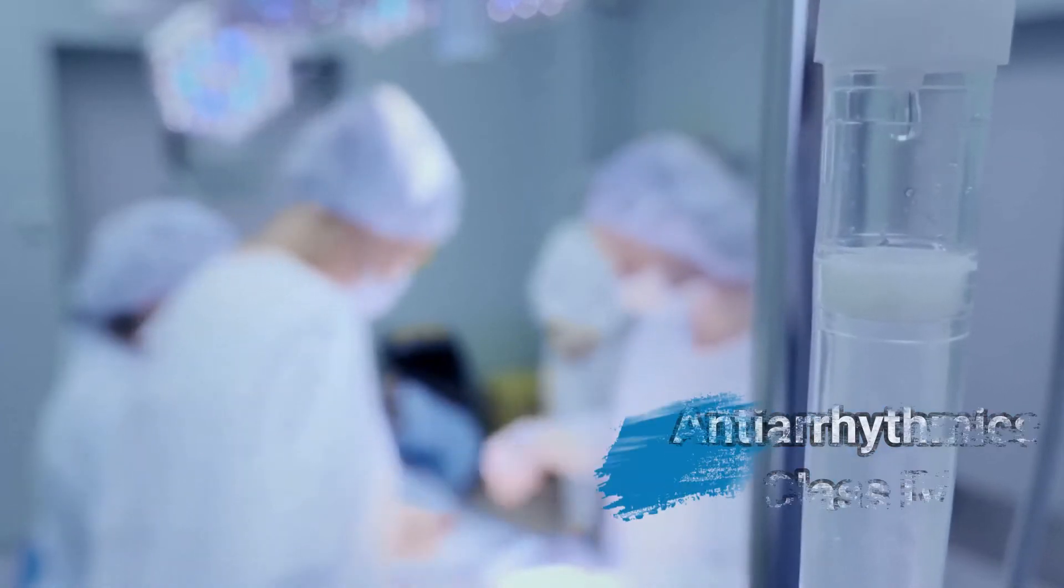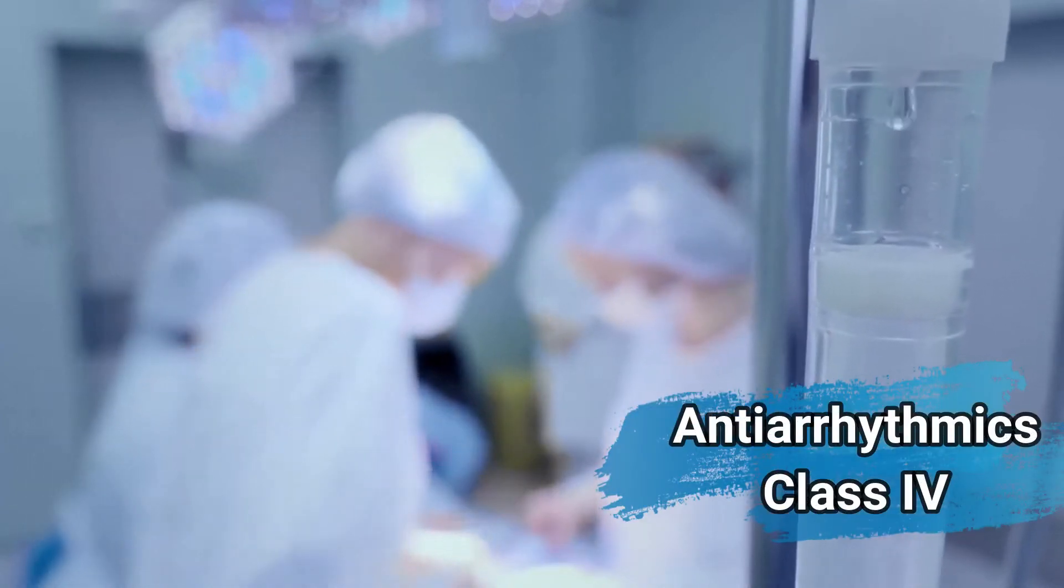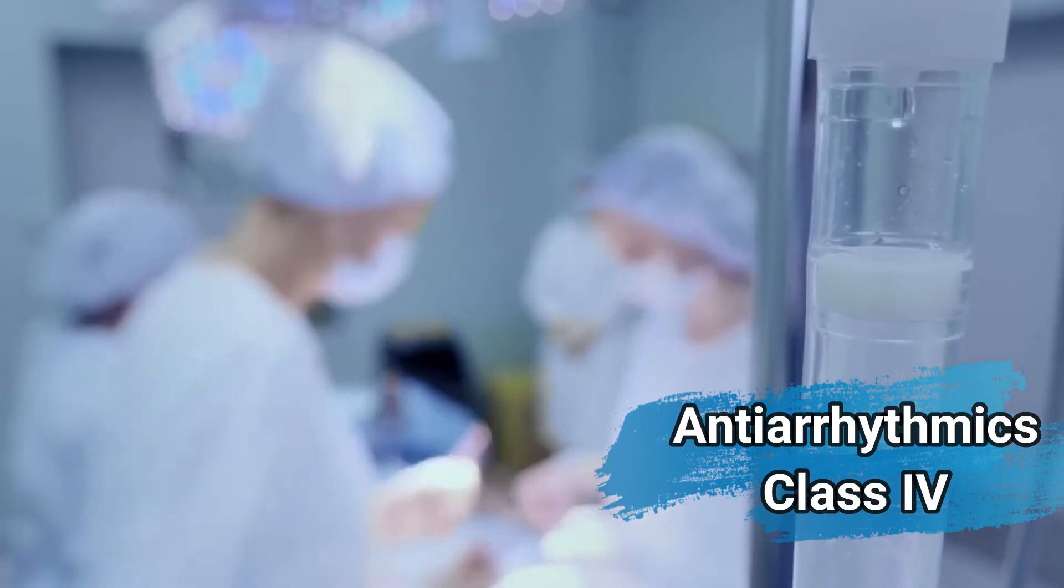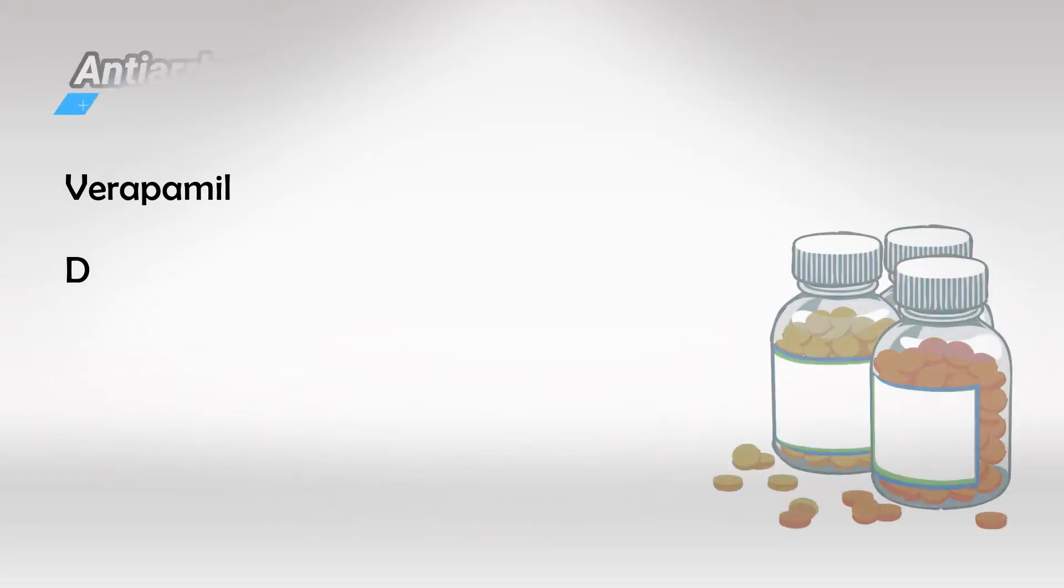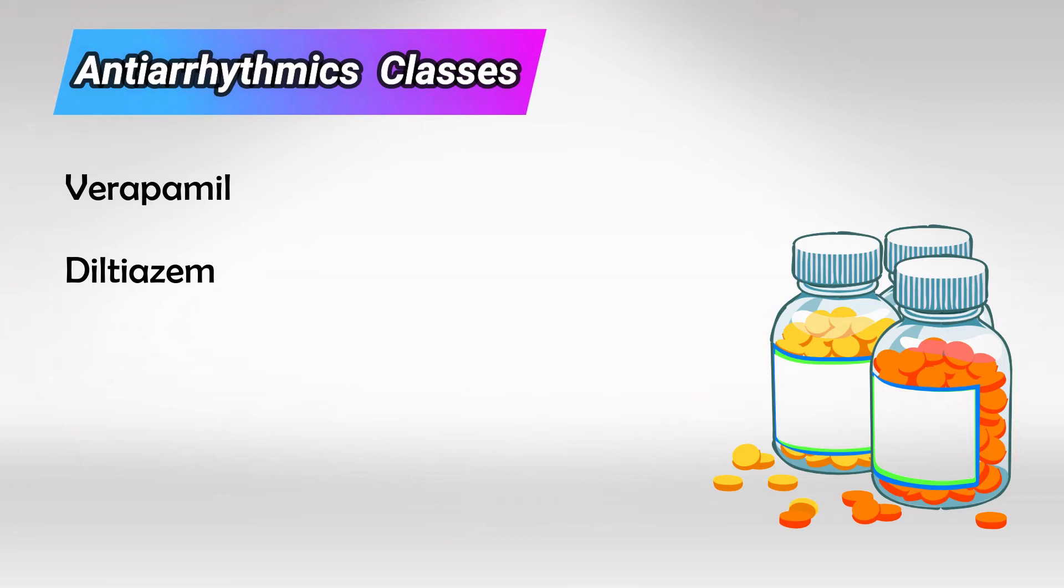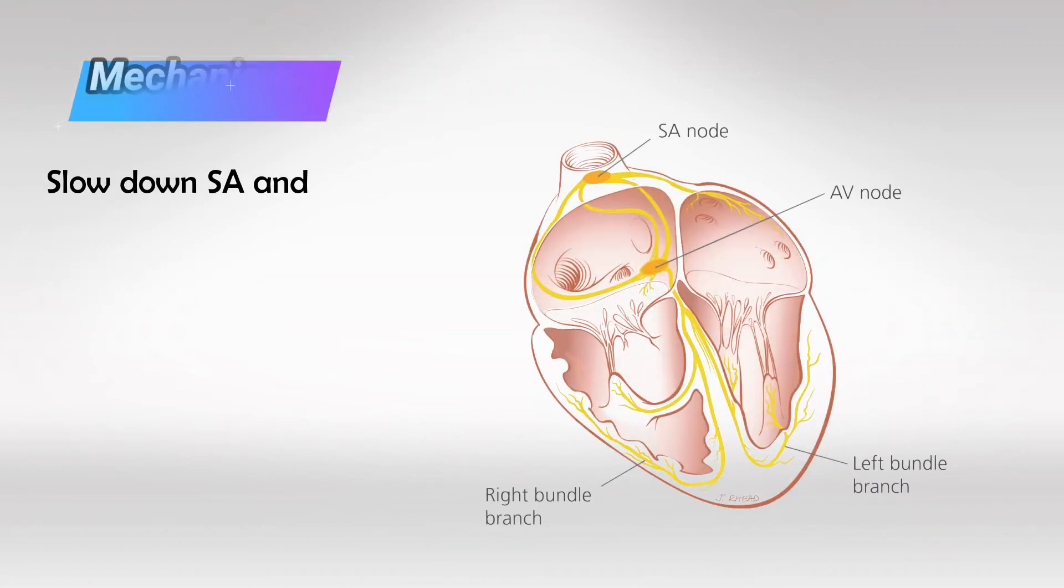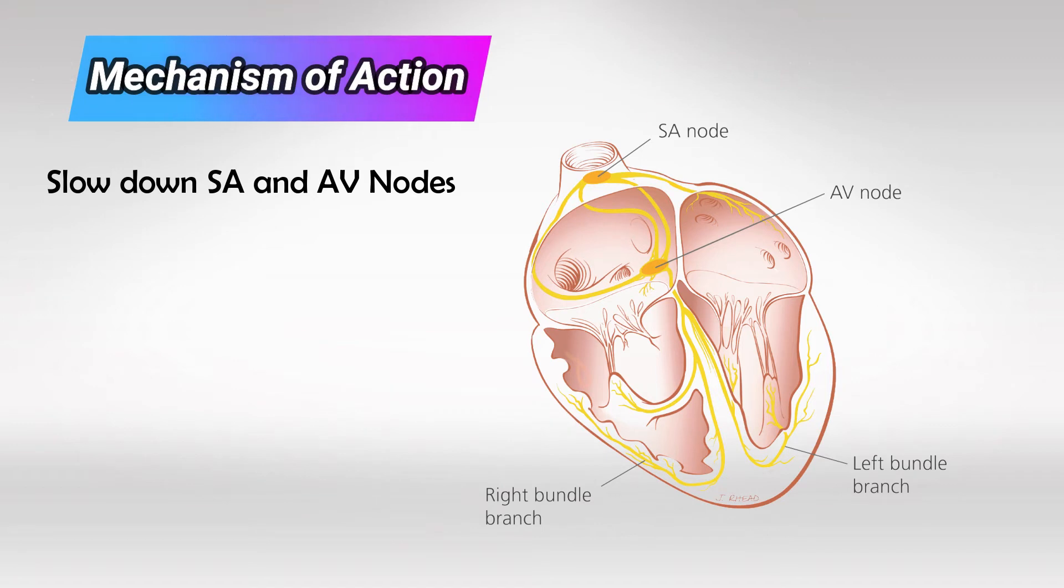Welcome back. Let's talk about the fourth and last class of antiarrhythmic drugs. These are Verapamil and Diltiazem. They work by altering both SA and AV nodes.